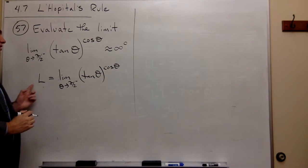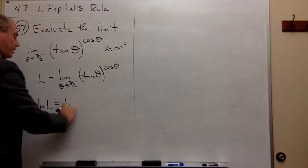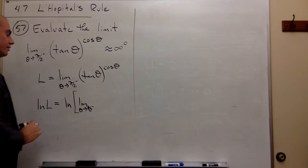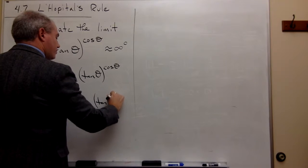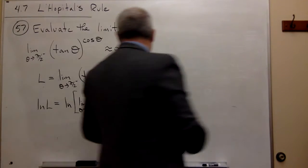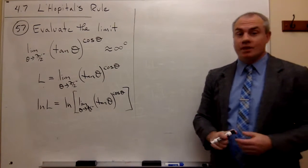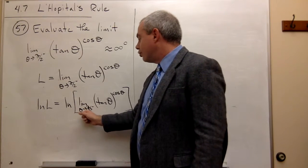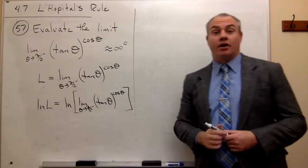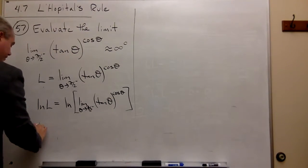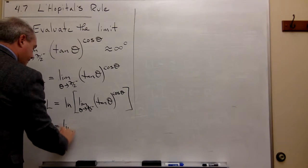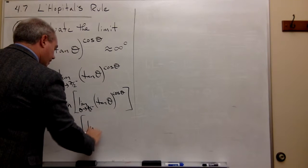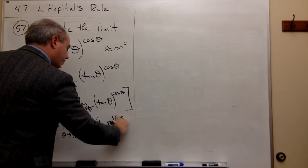Now I can take a natural log of both sides of the equation. If I do, I get ln of L is equal to ln of the limit as theta goes to pi over 2 from the left of tangent theta raised to the cosine of theta.